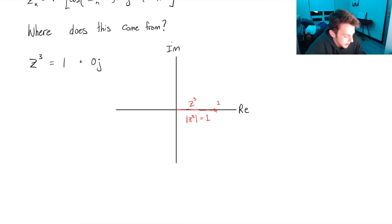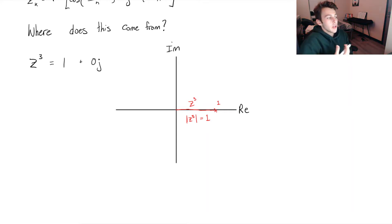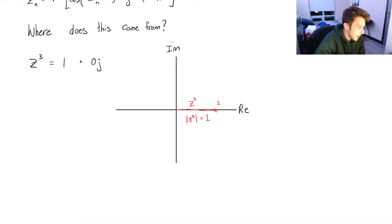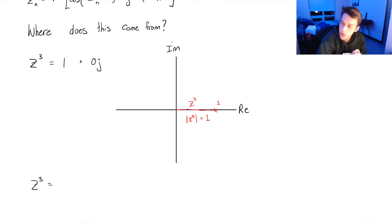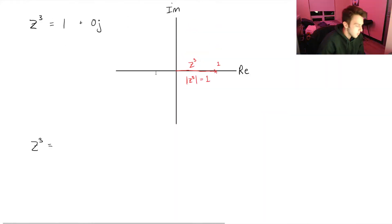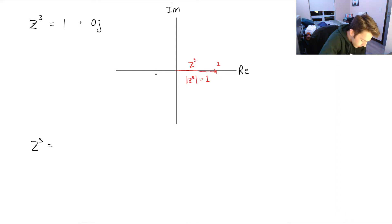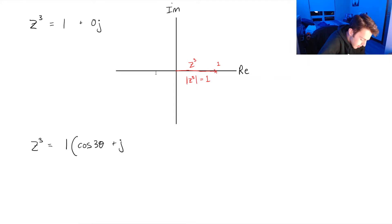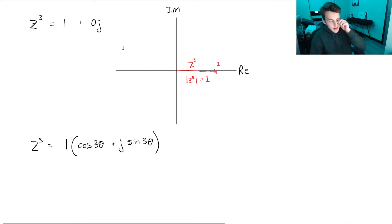The angle this vector makes with the real axis is 3θ, where θ refers to the angle of one of the roots. So we have z³ equals — from De Moivre's theorem — the modulus of z³, which is 1, times cosine of 3θ plus j times sine of 3θ. This is straight from De Moivre's theorem, which I can cover in a different video.